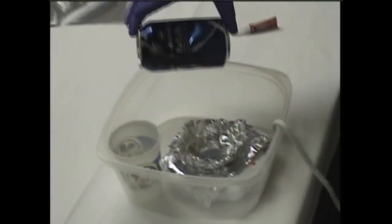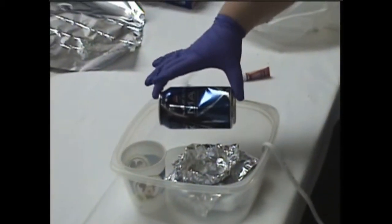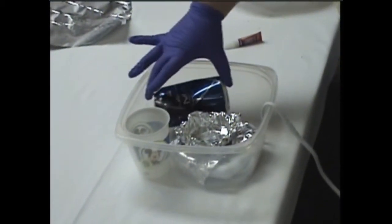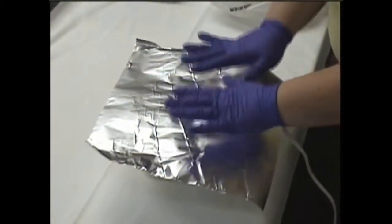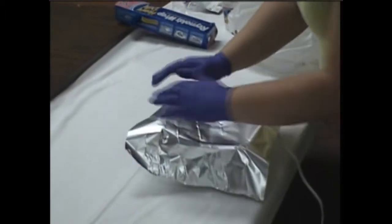Now we have the can that we are going to be fuming to look for fingerprints. You just place the can in the chamber and then cover the whole thing with some form of lid.